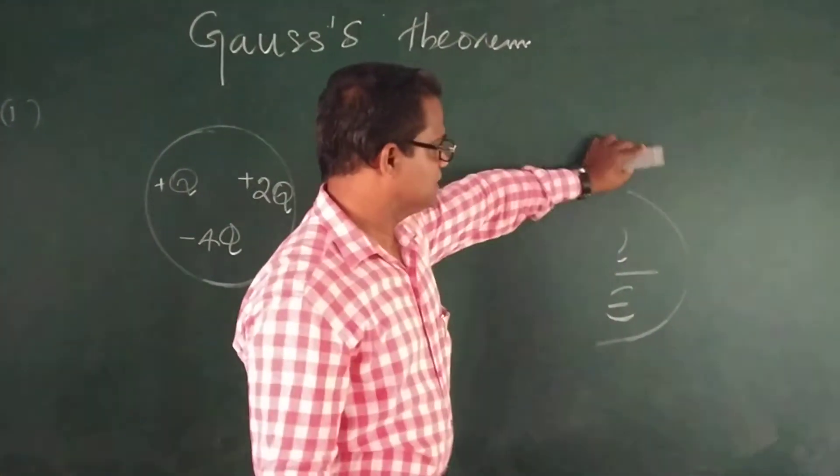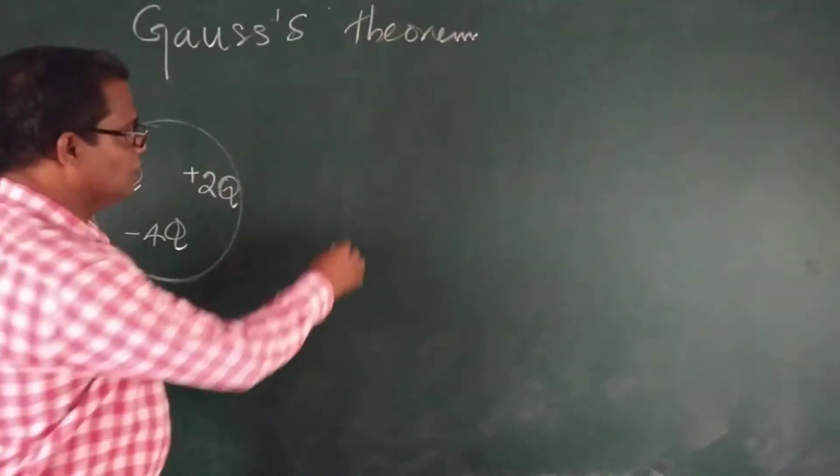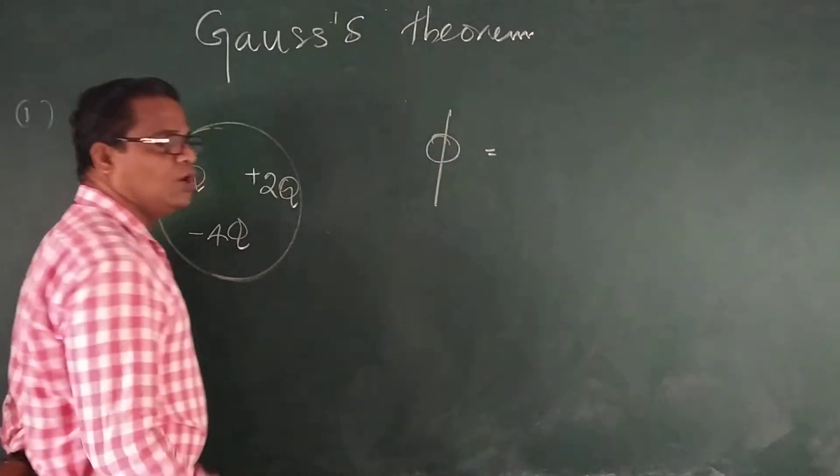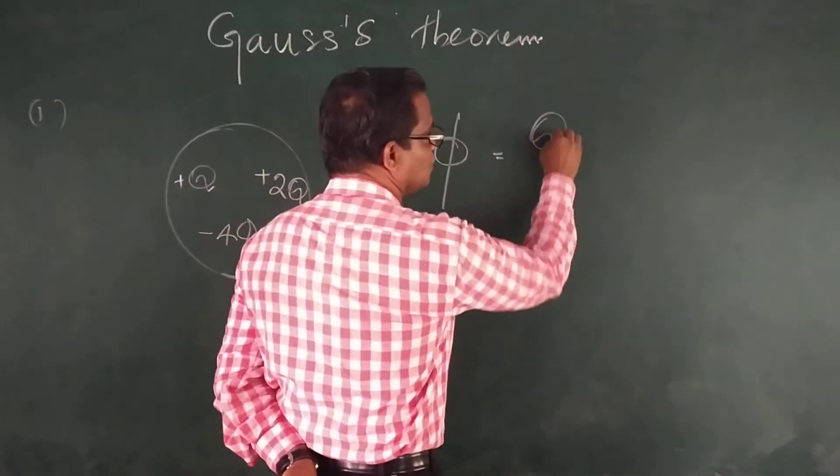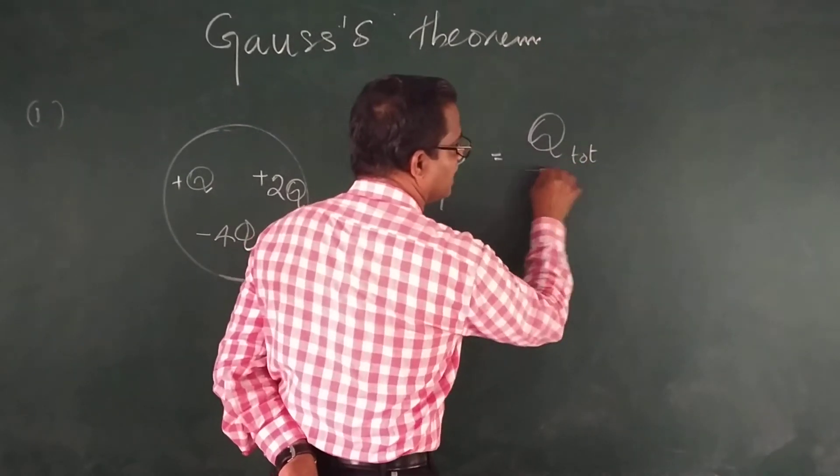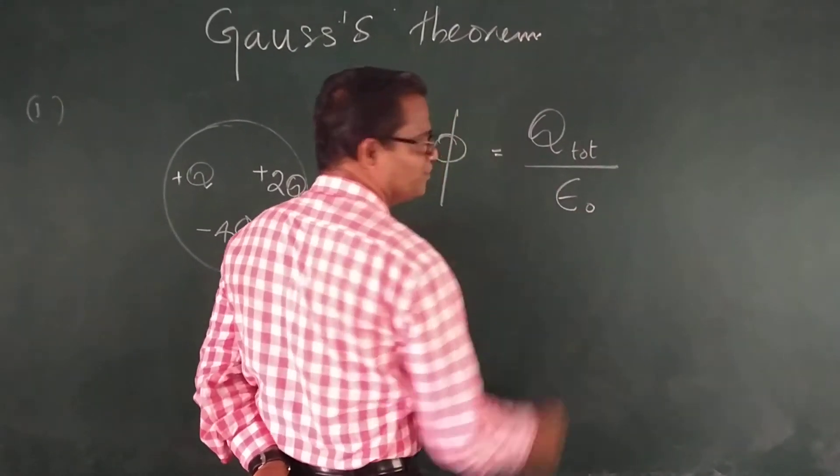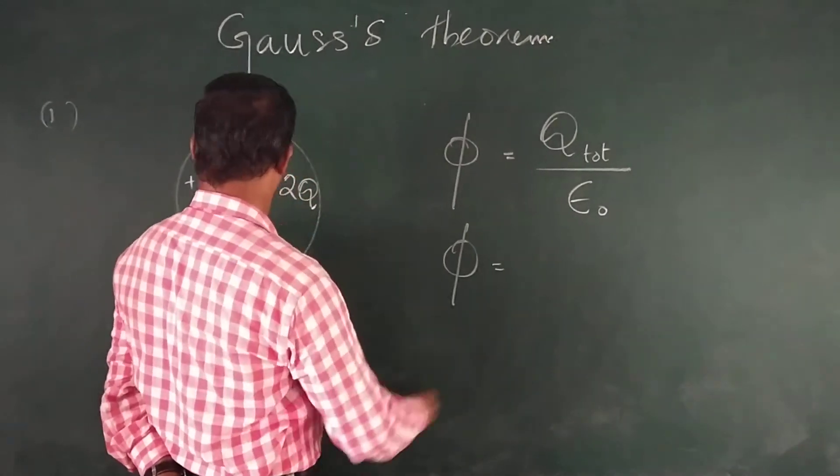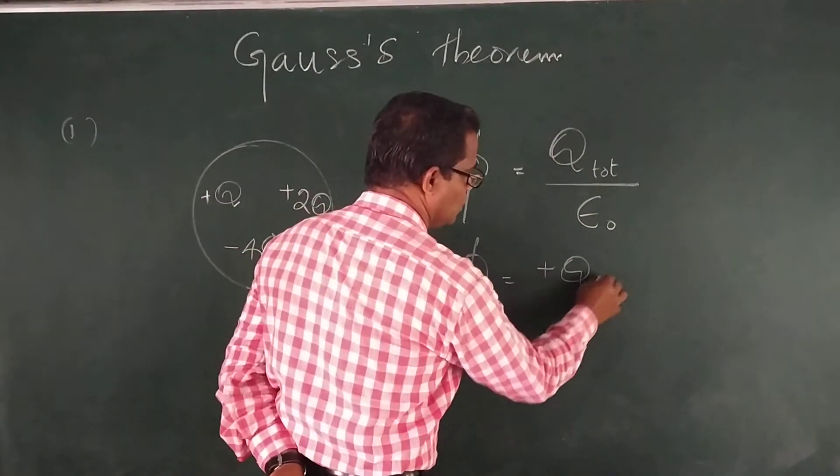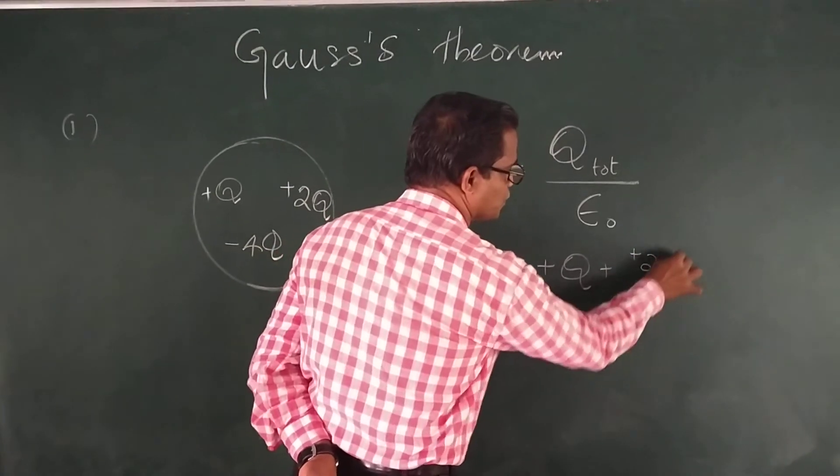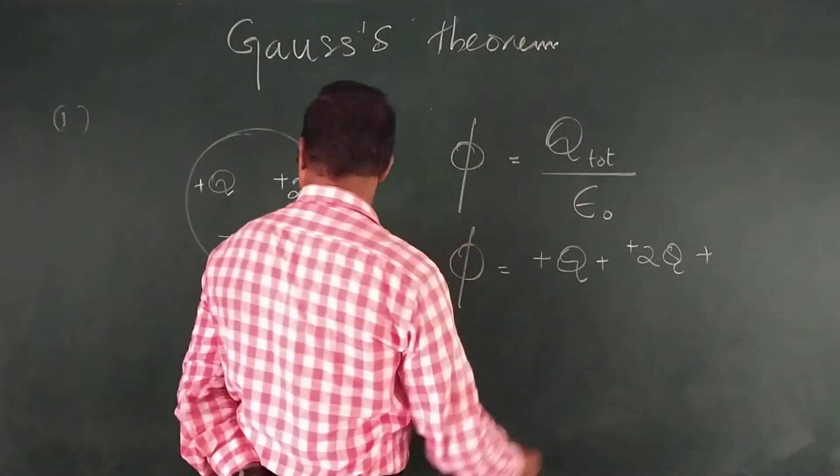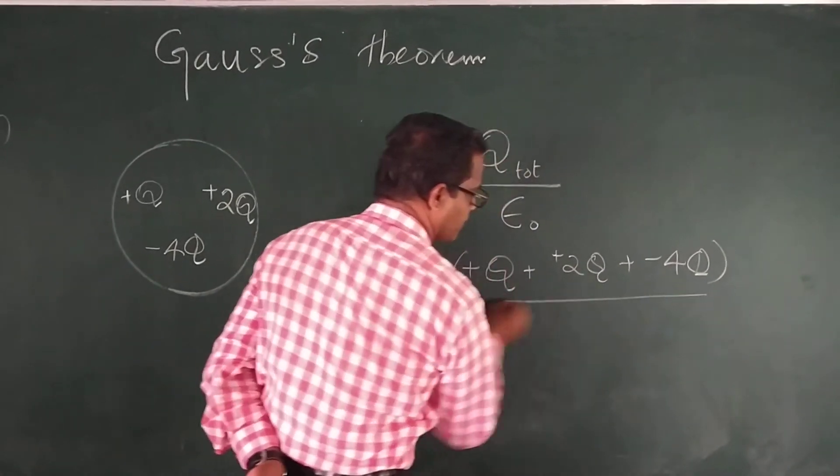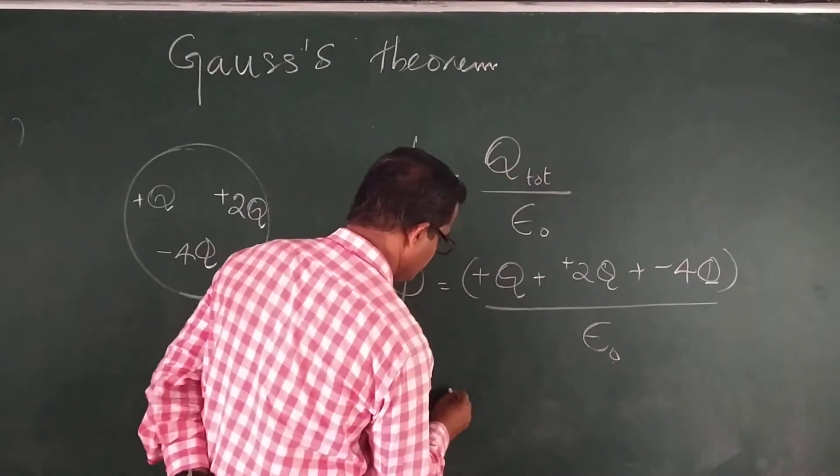Then the electric flux linked into the surface will be equal to phi, which is equal to total charge Q total divided by epsilon 0. That will be equal to plus Q plus 2Q plus minus 4Q, whole divided by epsilon 0.